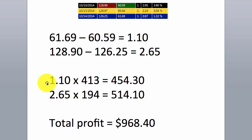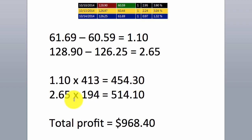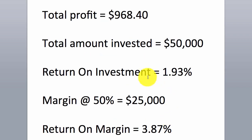Working out the profit in dollar terms — points made multiplied by position size — we made $454.30 on the long leg. Adding the profits from both the long and short leg, total profit was $968.40. Total amount invested was $50,000, giving a return on investment of 1.93%. At 50% margin, we would have put up $25,000, giving a return on margin of 3.87%.